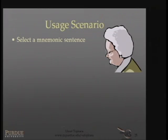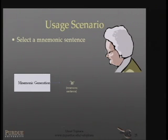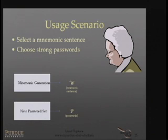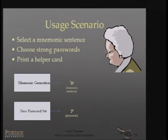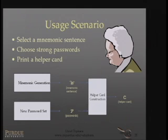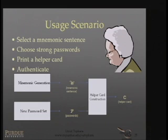First we select a mnemonic sentence. The system first generates a list of possible mnemonics for the user, and the user chooses one of them to his or her liking. Then we choose a set of strong passwords, which are preferably generated by a random password generator. Our system then generates a helper card that combines both pieces of information — the mnemonic sentence and the set of passwords. The user can then authenticate themselves by using their helper card.